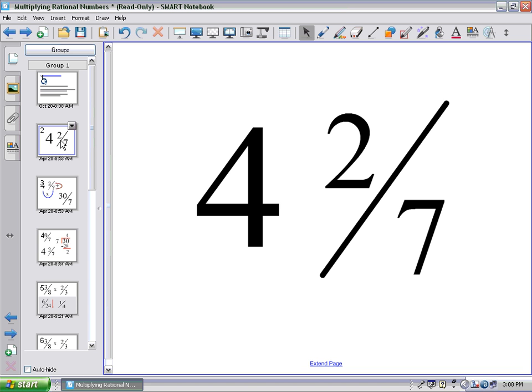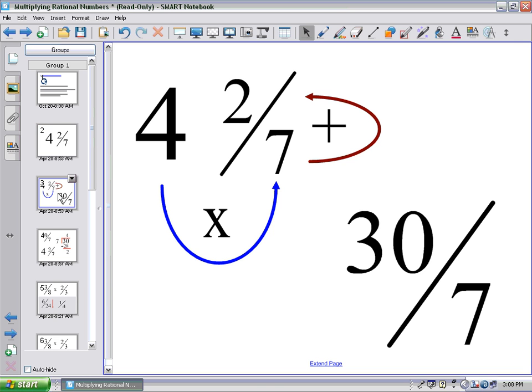First thing that we have here is a mixed value. A mixed value fraction is a fraction that is part fraction, part whole value. My whole value part is the 4, my fractional part is 2 over 7. To make a mixed fraction an improper fraction, here is what I do. I take my whole number out front, which is 4, and multiply it by my denominator, which is the bottom value. 4 times 7 makes 28. I then take that answer and add it to the numerator, which is 2, and 28 plus 2 makes 30.